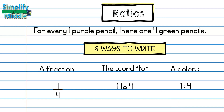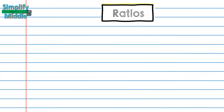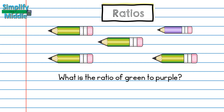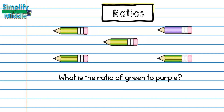Let's take a look at another example. We're still going to use the same pencils from the last example. But this time, the ratio asks for the number of green to purple. I still have 4 green and 1 purple. So when I write my fraction, I need to write what came first in the ratio as the numerator. So I have a numerator of 4, which represents my 4 green, and a denominator of 1, which represents my 1 purple.